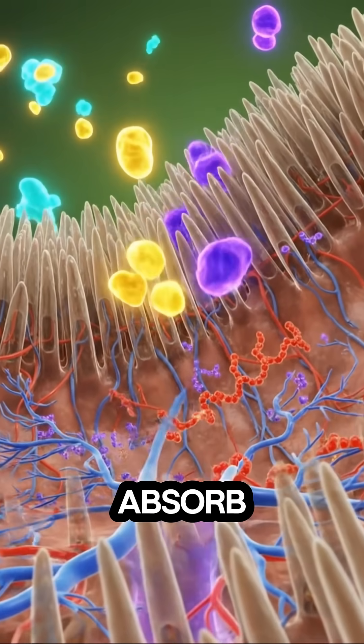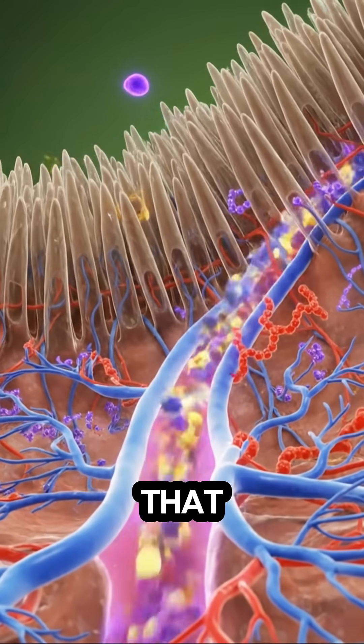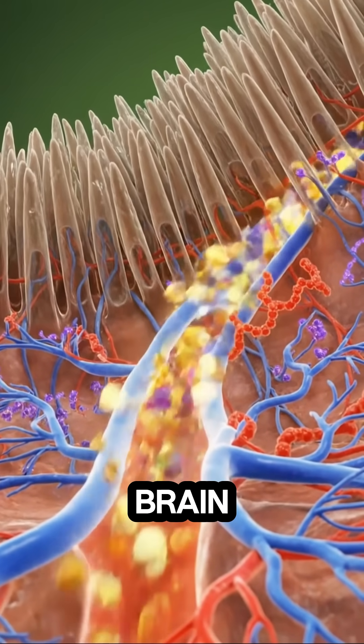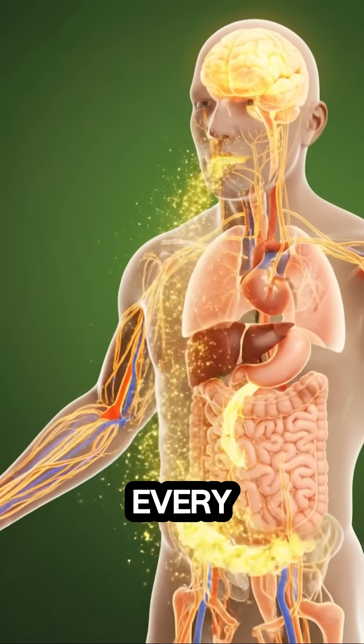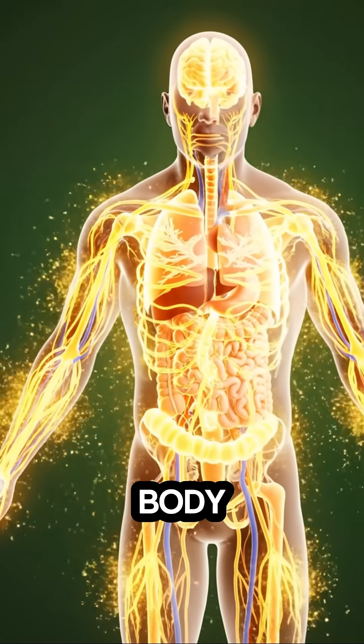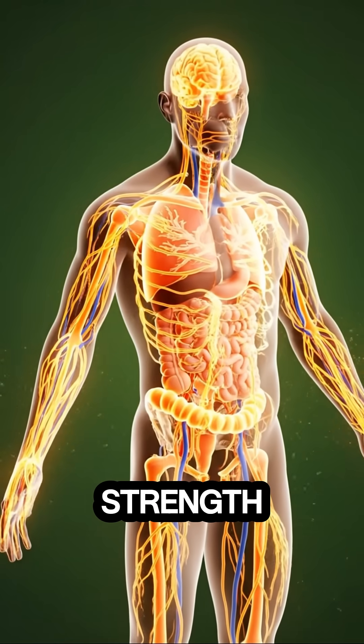Your intestines absorb powerful nutrients that support your muscles, brain, and heart. These nutrients circulate to every organ, giving your body clean energy and strength.